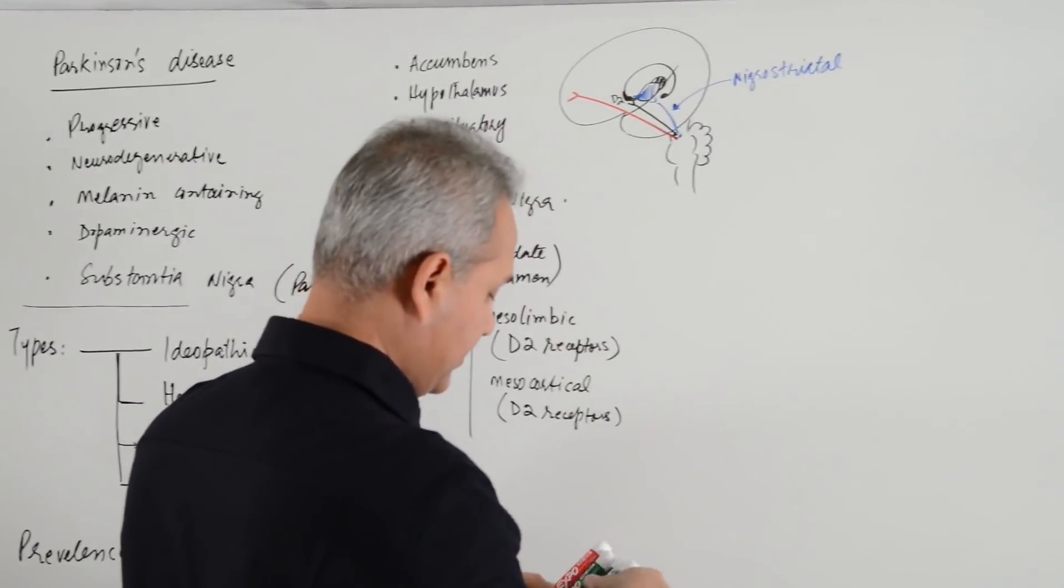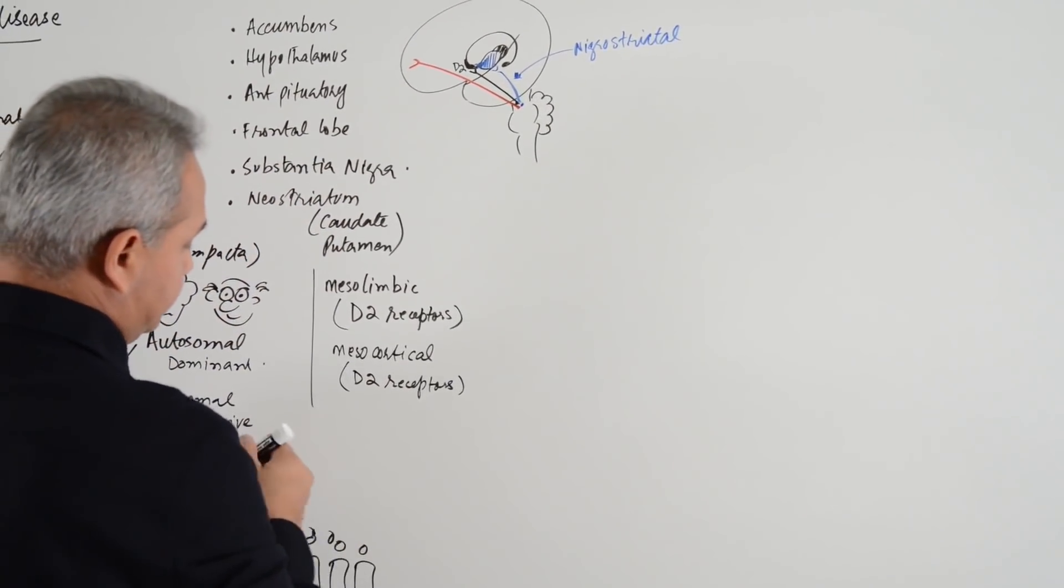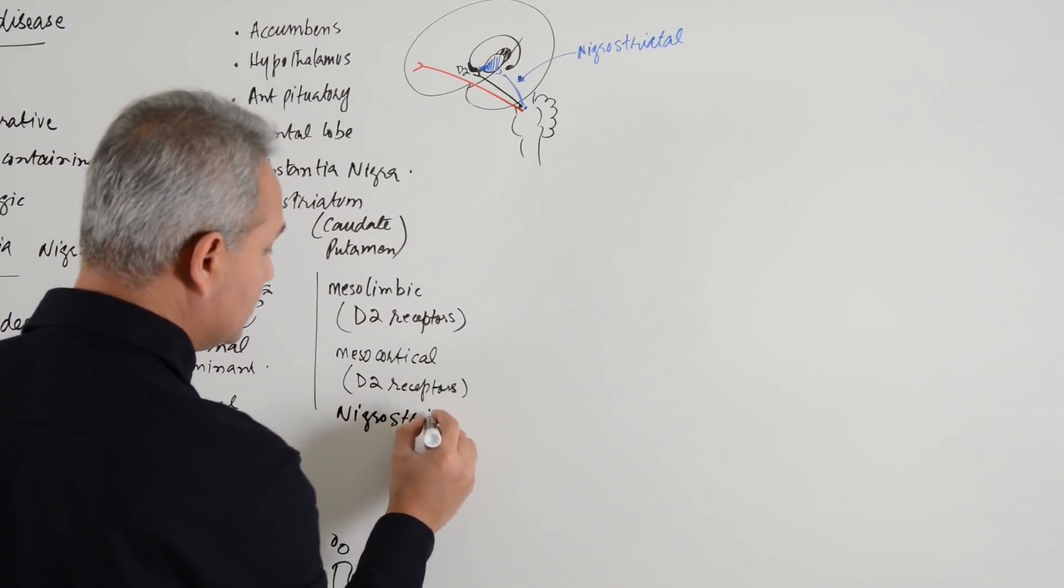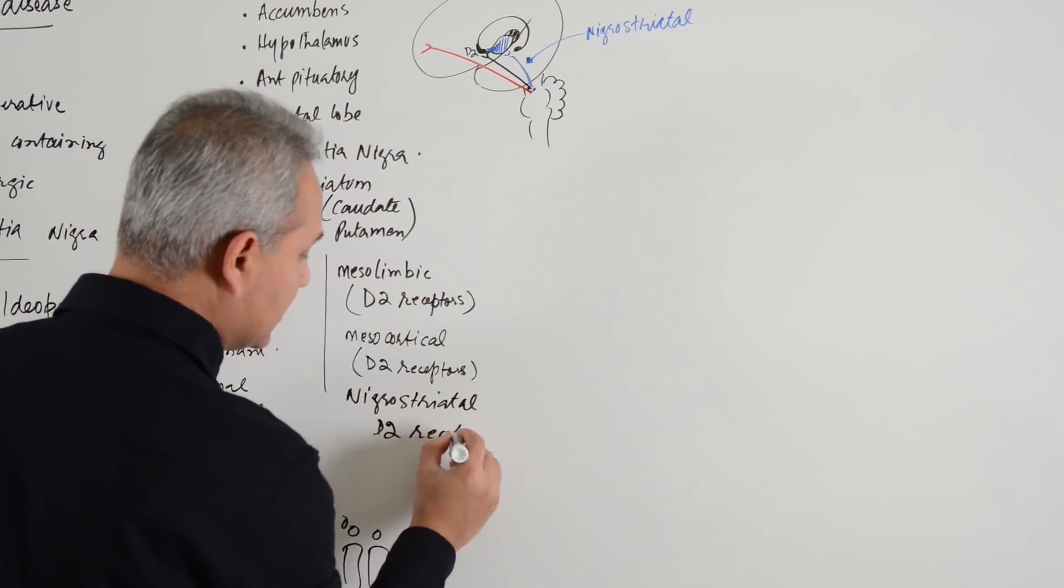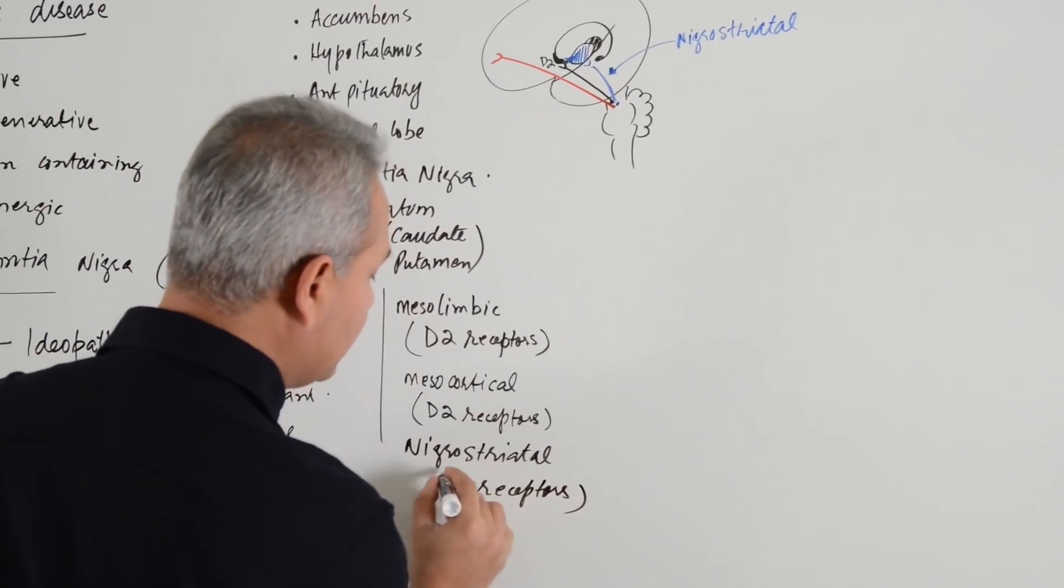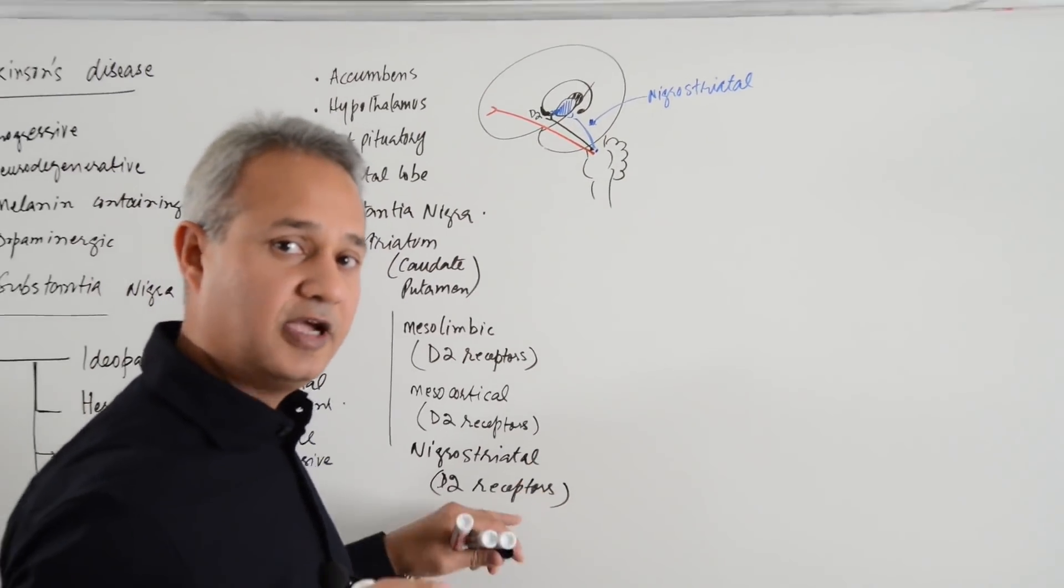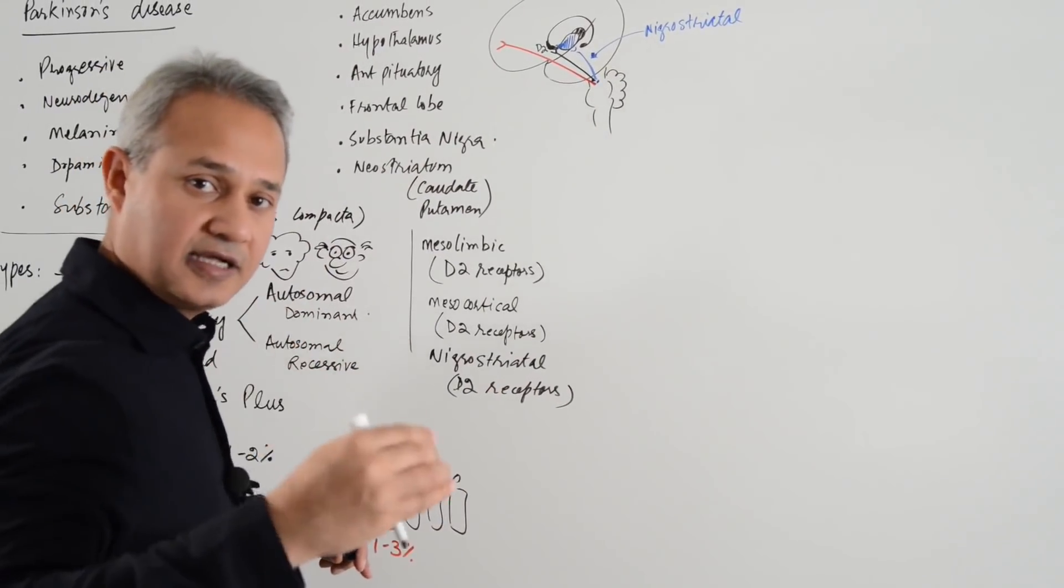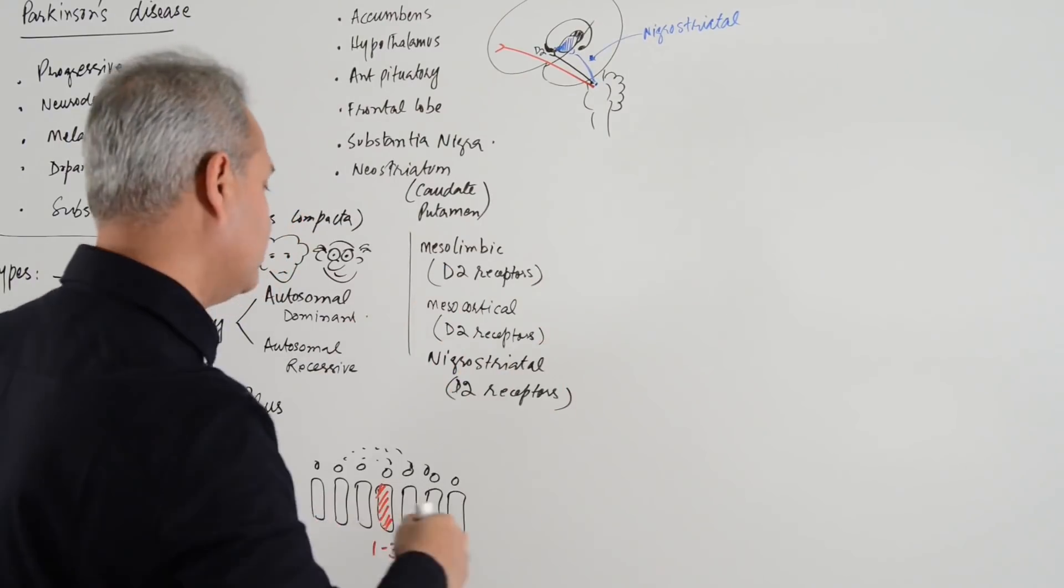Finally, so this was the nigrostriatal pathway, again D2 receptors. Remember, nigrostriatal pathway actually has D1 and D2 receptors both. We are talking about the D2 receptors coming from substantia nigra pars compacta to the caudate nucleus and putamen.